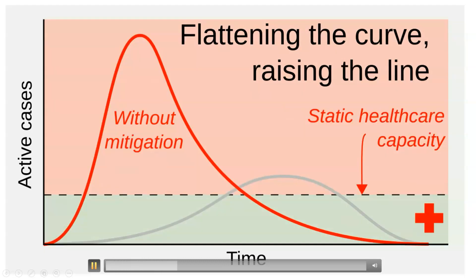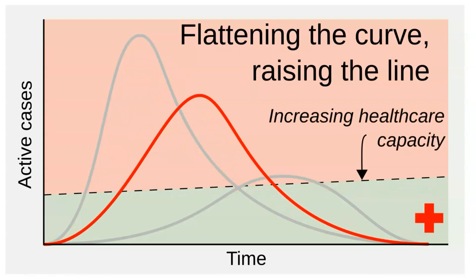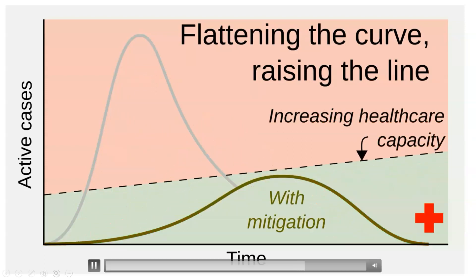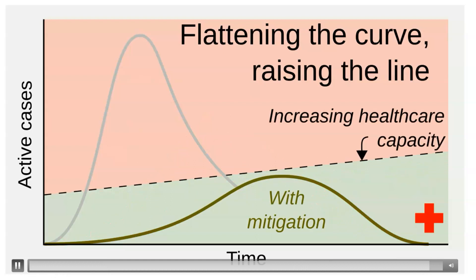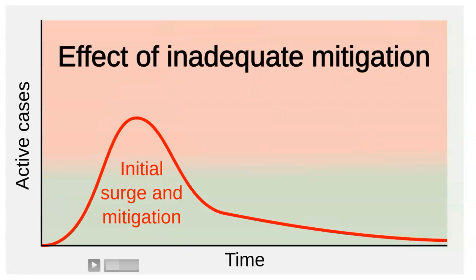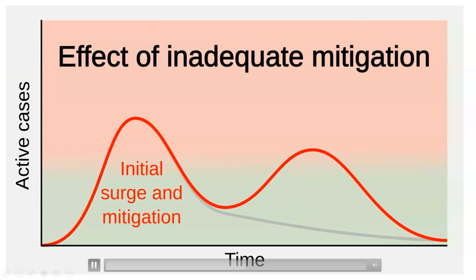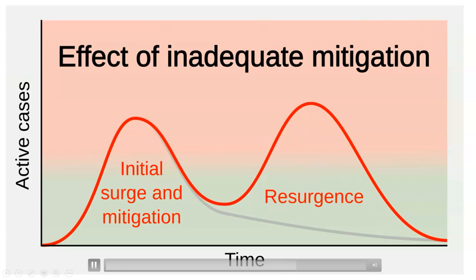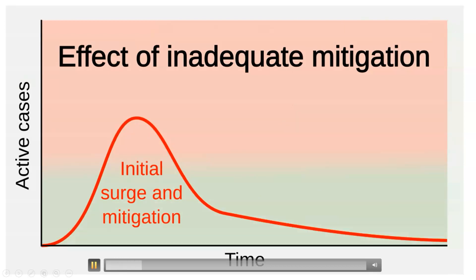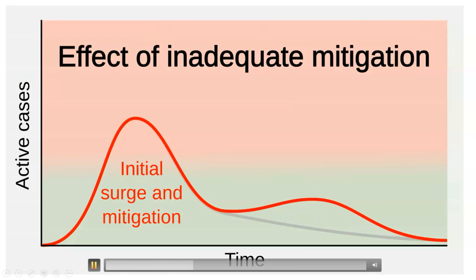If you didn't have enough respirators, then patients would not get treated and could possibly perish. The idea is to reduce the incidence of disease to a level below the current health care capacity. This was done by reducing the number of exposures through social distancing. Another concept is the effect of inadequate mitigation, where the social distancing guidelines would be relaxed before there was sufficient reduction in the level of disease. This would cause a drastic increase in the level of disease — the so-called second wave.